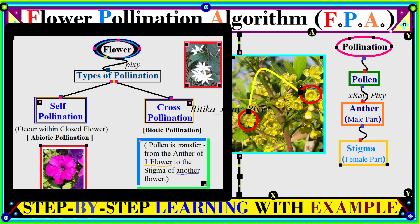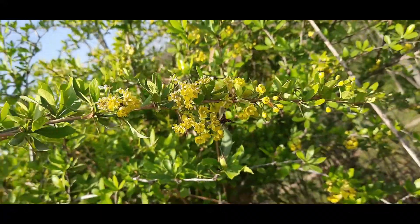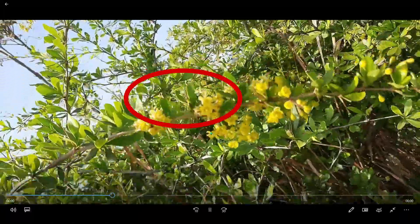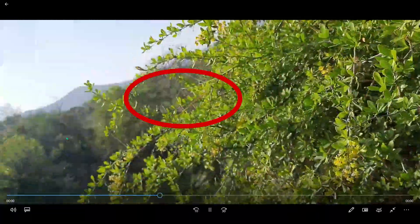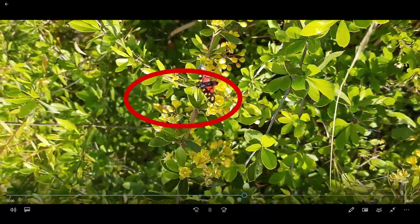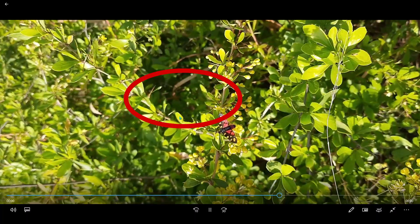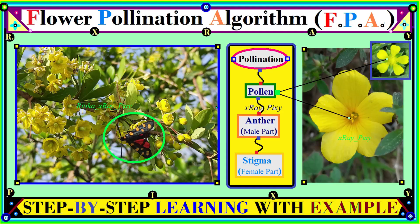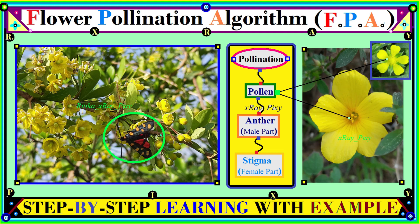In cross-pollination, when the pollinator moves from one flower to another, the pollen attaches to the pollinator and is then transferred when it lands on another flower. Pollen plays a very important role. In this algorithm, we will call the pollen or flower the solution vector. We have the pollen, the flower, and the pollinator.